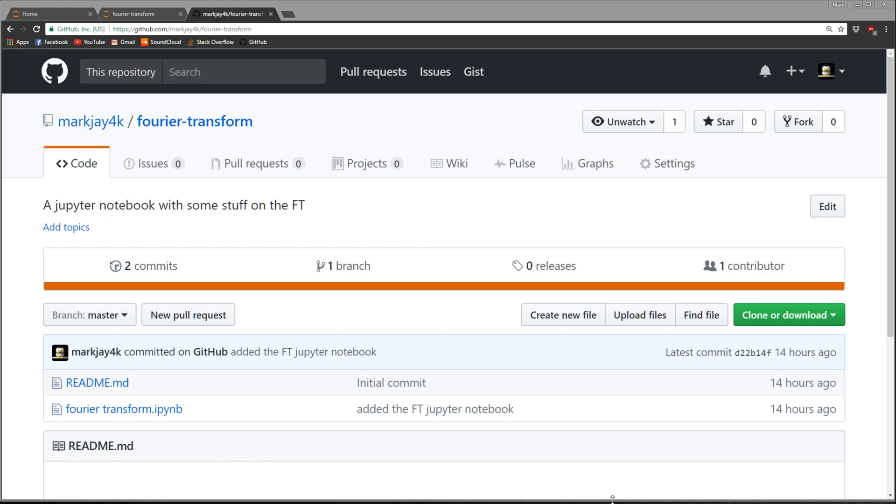To get started, what I did to help with this video is prepared a Jupyter notebook. So I'll add a link in the description where you can access that. Basically it'll take you to my GitHub and you'll click on this Fourier transform dot IPYNB.